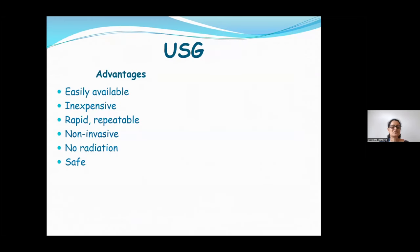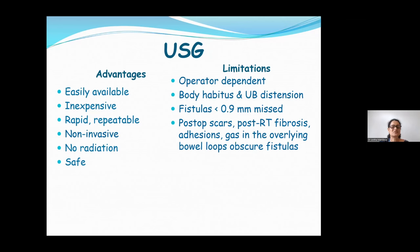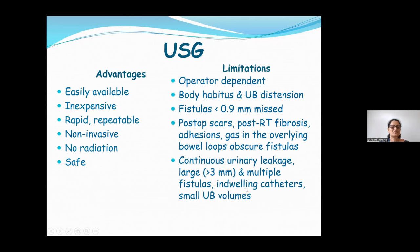Moving to imaging modalities — ultrasound is very important because it is easily available and inexpensive. However, it has limitations: small fistulas of less than one centimeter can be easily missed, post-operative and post-radiation cases have disturbed anatomy, and inadequate urinary bladder volume in vesical fistula cases limits the field of view. Despite this, there are important clues to look for.